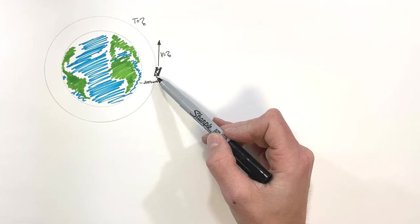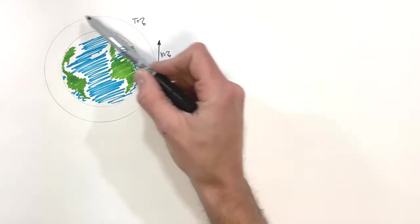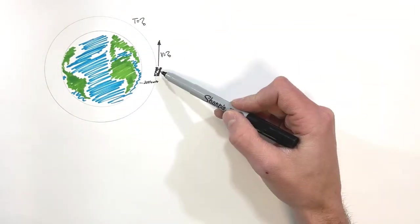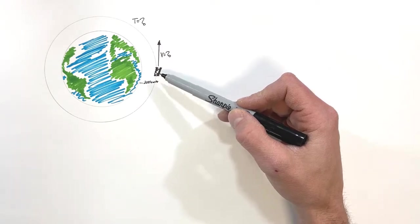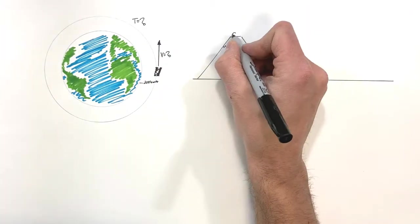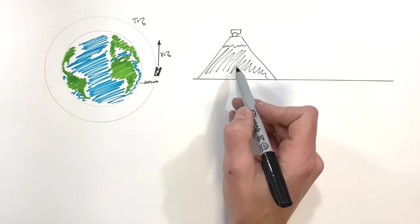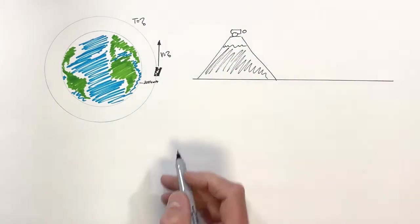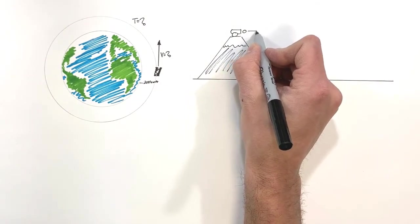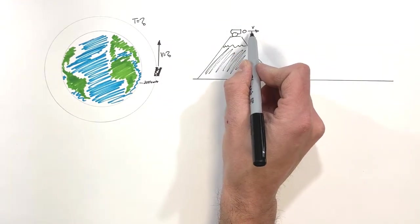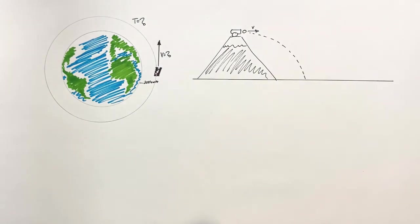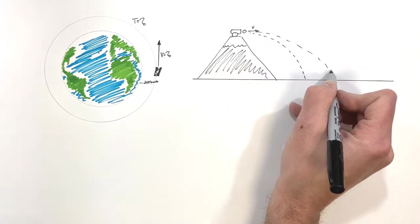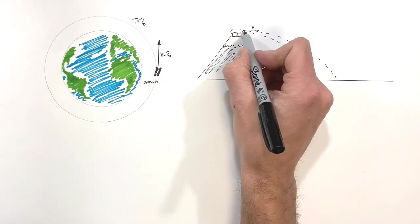To solve for velocity and period, we need to understand what is keeping this satellite in orbit. To get a better understanding, I want to go back to an experiment Newton thought up: a cannon placed on top of a mountain. If we fire a cannonball and ignore air resistance, it travels in an arc and lands at the base of the mountain. If we fire it a little bit faster, it goes a little bit further.